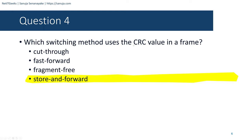Question number twenty-seven: What are two examples of the cut-through switching method? Options include store-and-forward, fast-forward, CRC switching, fragment-free, and QoS switching. The answer is fast-forward switching and fragment-free switching — both are types of cut-through switching.